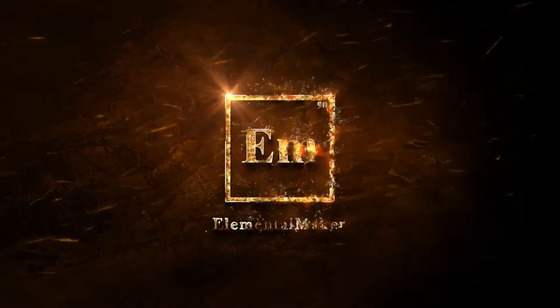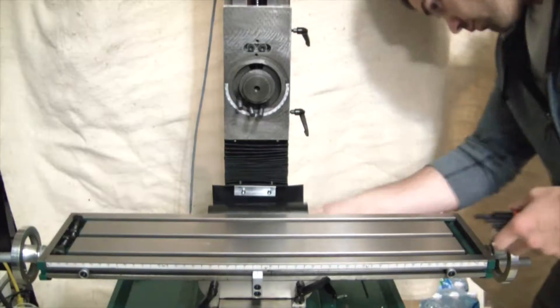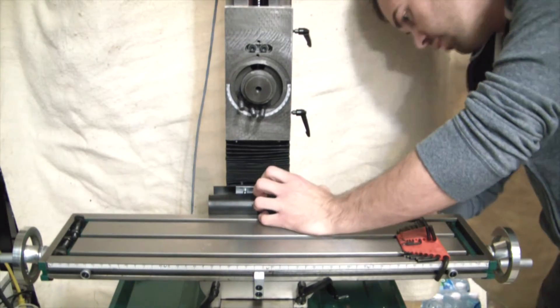Hey, what's going on guys, this is the Elemental Maker, and today I'm going to be going over the disassembly of the G0704 CNC milling machine in preparation to convert it over to ball screws. I'm also going to quickly cover milling the pocket for the x-axis ball screw and extending the slot on the base of the mill so that you can maintain your full 7 inches of Y-travel.